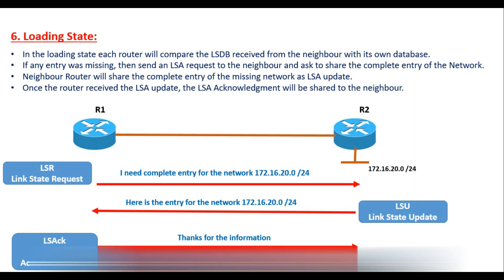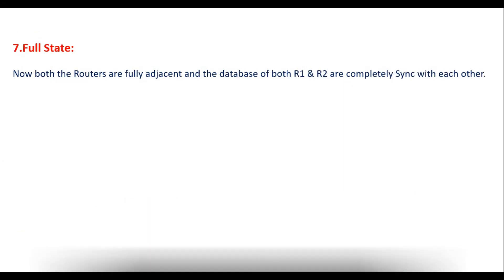In the Full state, both routers are fully adjacent and the databases of both routers are completely synchronized with each other. Whatever information R1 has is also available in R2, and whatever information R2 has is also available in R1. This is the Full state. This is how the OSPF states work, and whenever you are designing or implementing your OSPF network, this is how the routers will undergo the states to form an OSPF network.